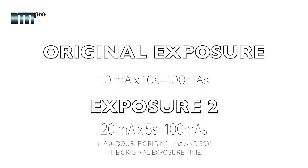If we double the milliampere, we would need to reduce the exposure time by 50% to get the same exposure. For example, if we have 20 MA and a 5-second exposure, we would still have a 100 MAS exposure. From this example, we can verify that the exposure is still 100 milliampere seconds as in the original exposure, due to doubling the milliampere and reducing the exposure time by half.